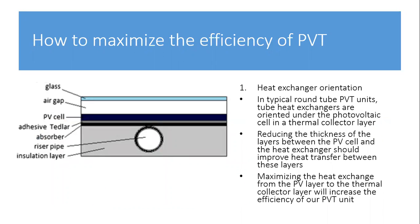How we maximize the efficiency of the PVT model starts with heat exchanger orientation. In typical round tube PVT units, the tube heat exchangers are oriented under the photovoltaic cells in the thermal collector layer. Reducing the thickness of the layers between the PV cells and the heat exchanger should improve heat transfer between these layers, maximizing exchange from the PV layer to the thermal collector layer and increasing the efficiency of the PVT unit.